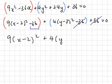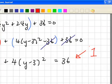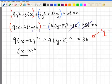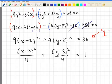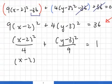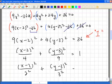We now have 9 times (x minus 2) squared plus 4 times (y minus 3) squared equals 36. This is still not the standard general form of an ellipse — the right-hand side needs to equal 1. So we divide throughout by 36, giving x minus 2 squared over 4 plus y minus 3 squared over 9 equals 1, which can be written as (x minus 2) squared over 2-squared plus (y minus 3) squared over 3-squared equals 1.